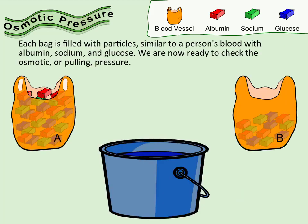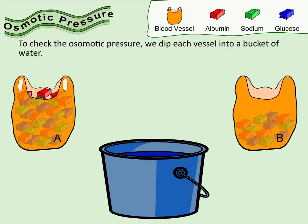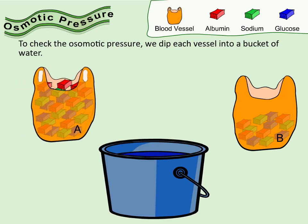Each bag is filled with particles similar to a person's blood with albumin, sodium, and glucose. We are now ready to check the osmotic, or pulling, pressure. To check the osmotic pressure, we dip each vessel into a bucket of water.